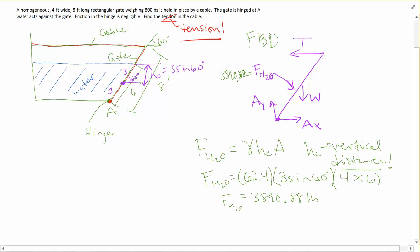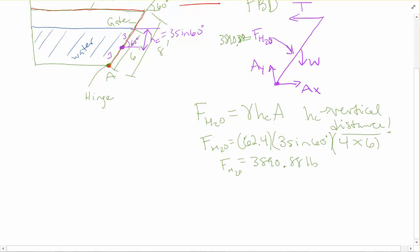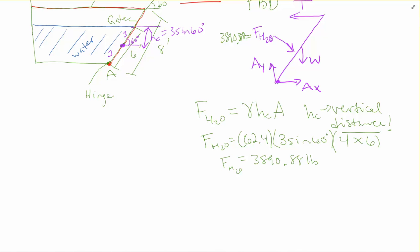Now in just a minute let's put up there where that's located. To do that, we need our YCP equation. I'm sure everybody remembers this one. It is negative Ixx times sine of the angle over H sub C times A.